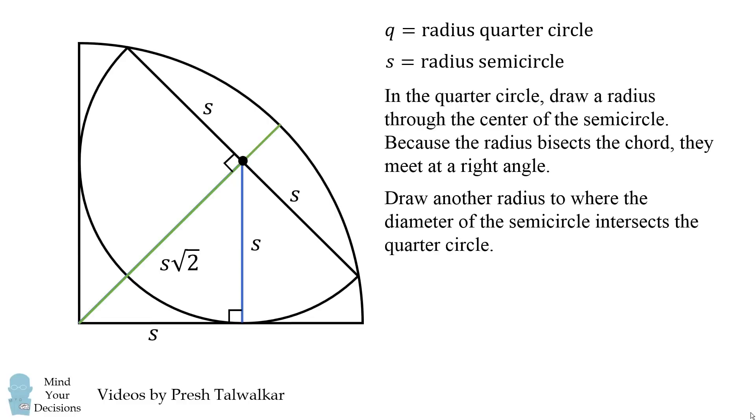Now in the quarter circle, let's draw another radius to where the diameter of the semicircle intersects the quarter circle. Because this is a radius of the quarter circle, its value will be equal to q.